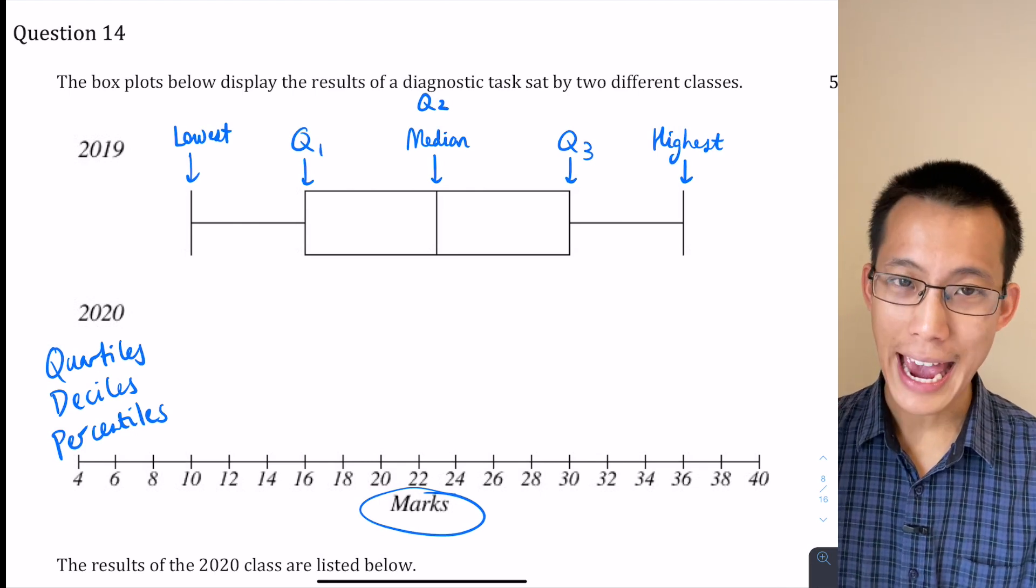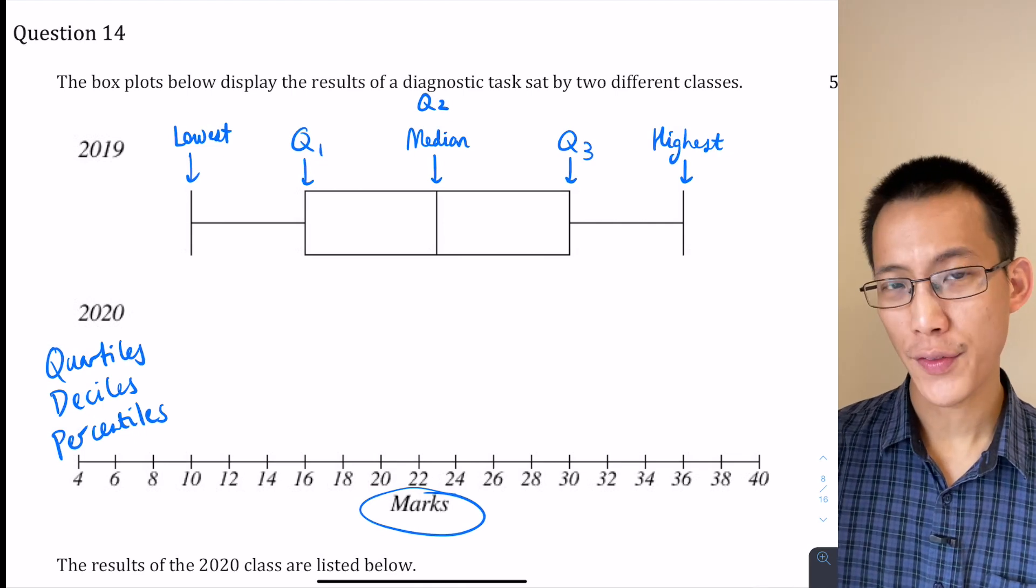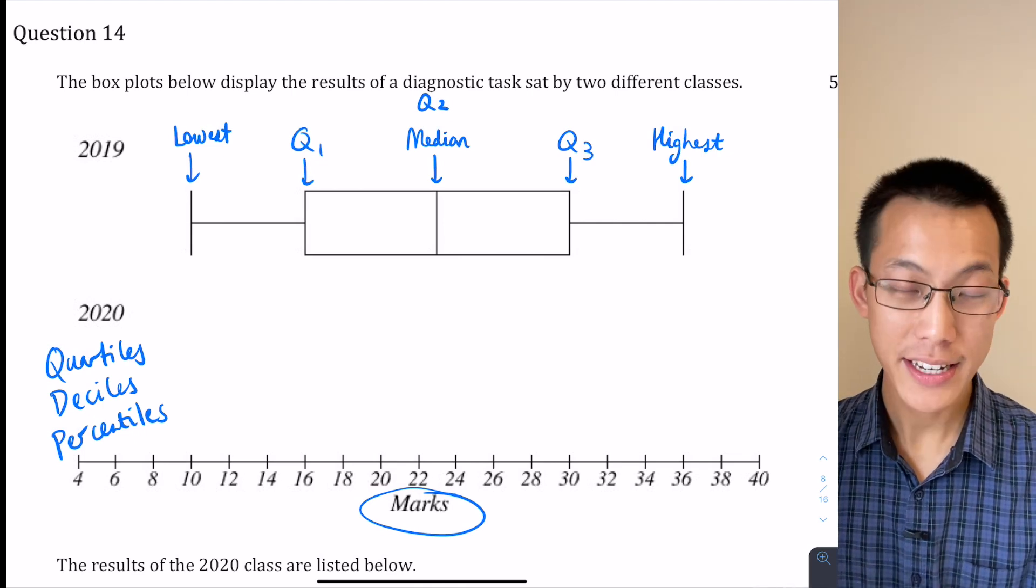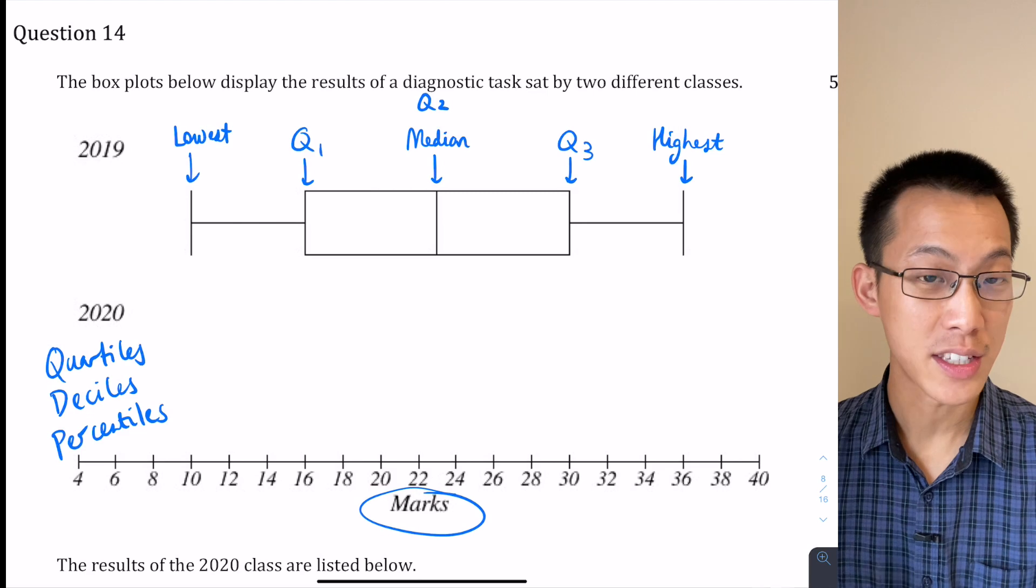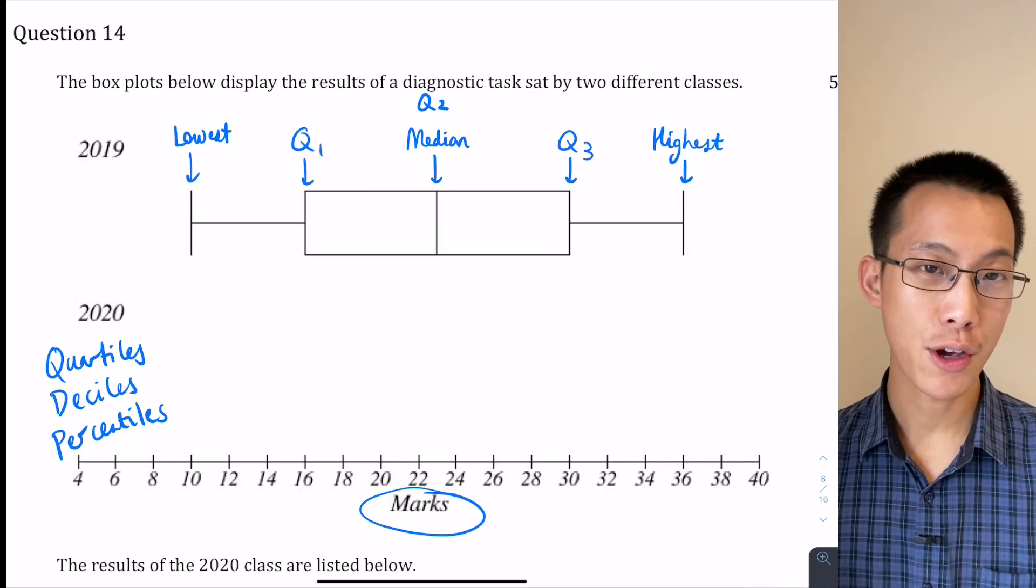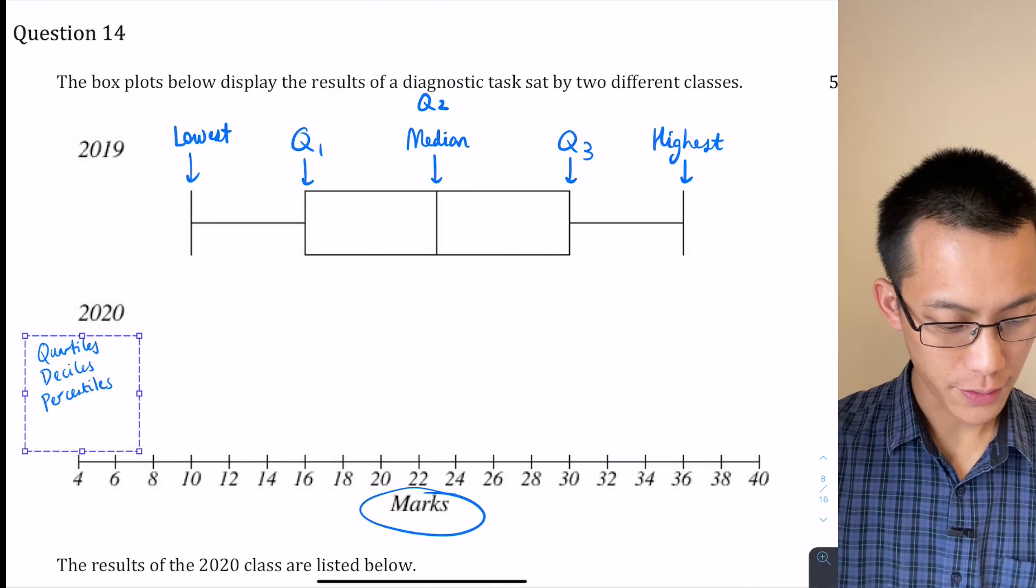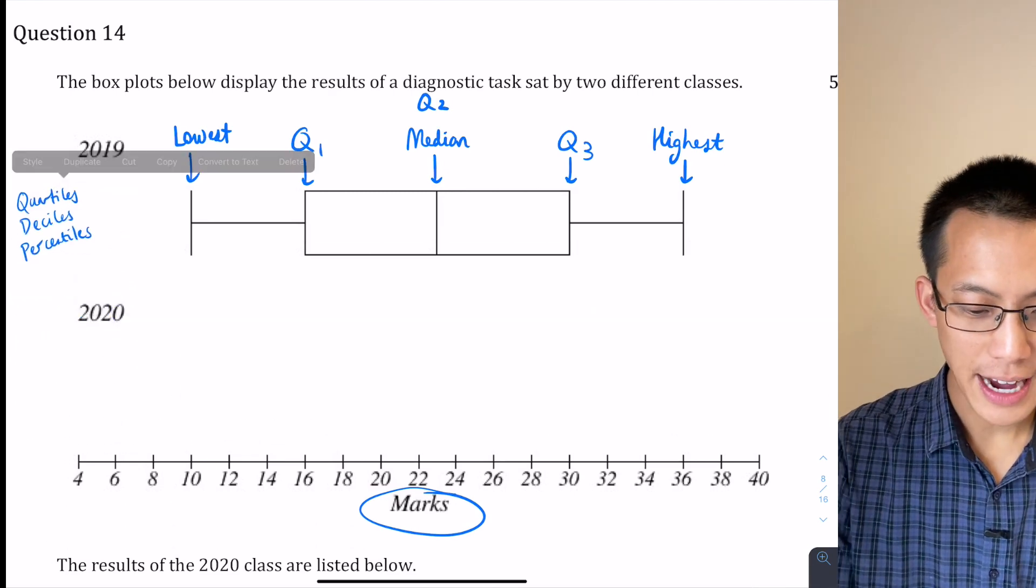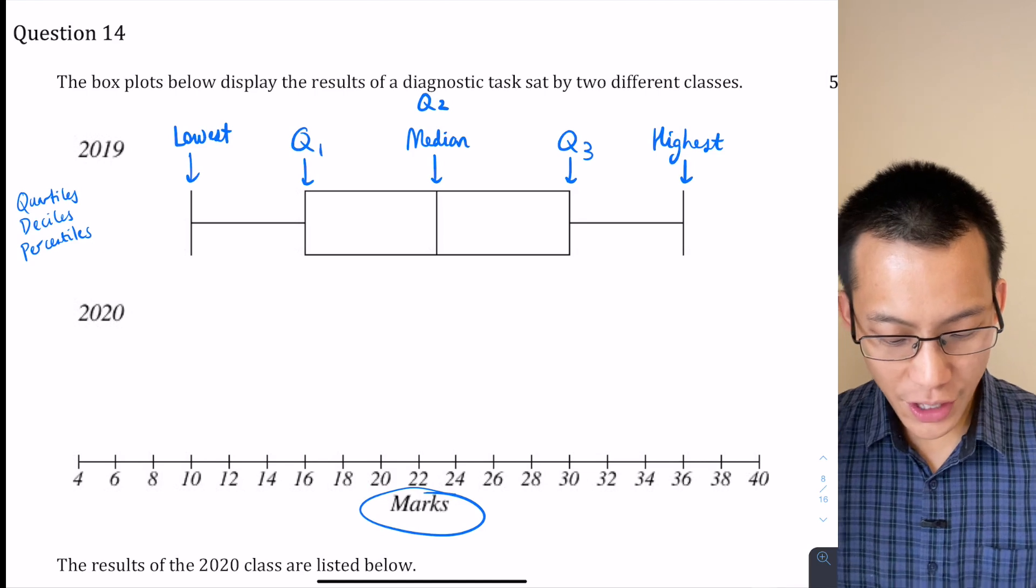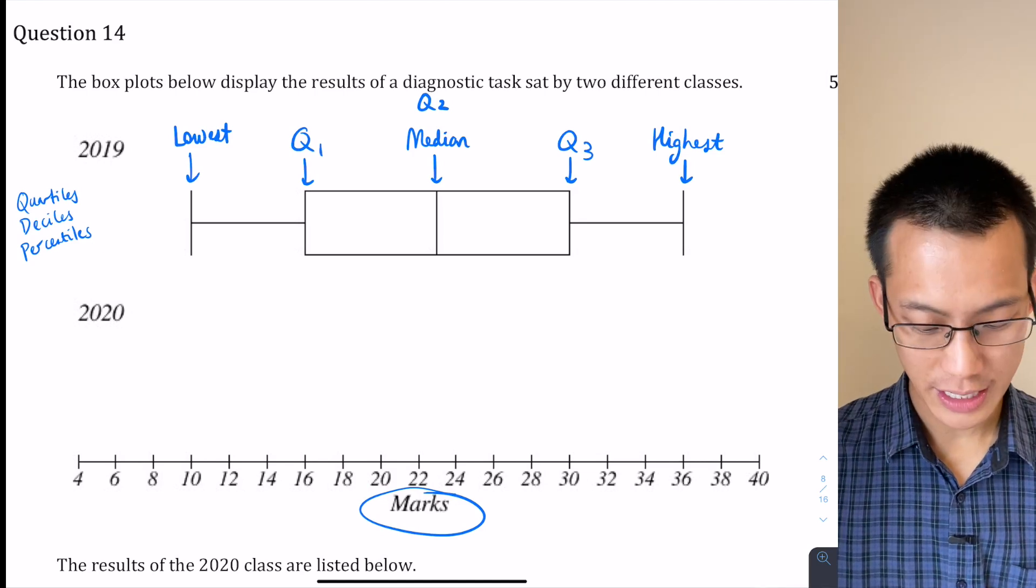So people's ATAR tells you, if you've got an ATAR of 75, that means you perform better than 75% of the same cohort who did the exam with you. So we know what these data points are supposed to be. How are we going to find them for the 2020 class? Well, because all of these data points—lowest, Q1, Q2, Q3, and the highest—depend on order.